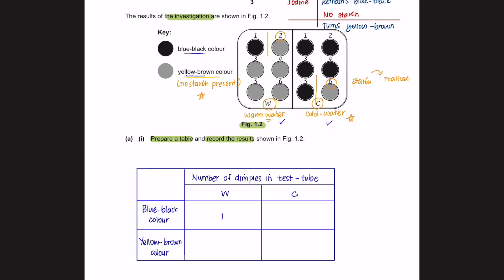So the number of dimples in test tube W which has blue-black color is only 1. And the yellow-brown color was found in the number of dimples 2 to 6. Whereas in test tube C, the number of dimples that showed blue-black color was 1 to 5. And the number of dimples that showed yellow-brown color was 6.